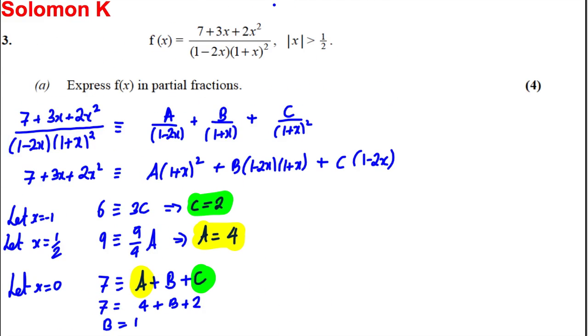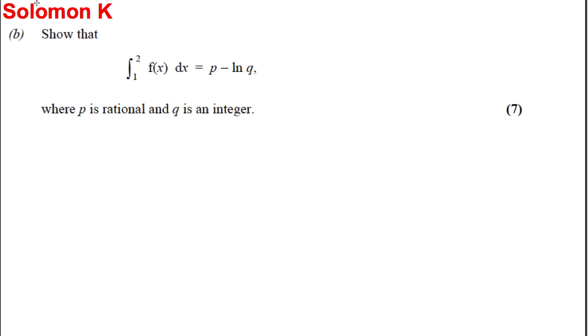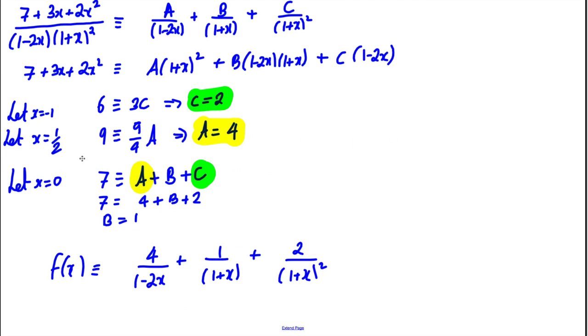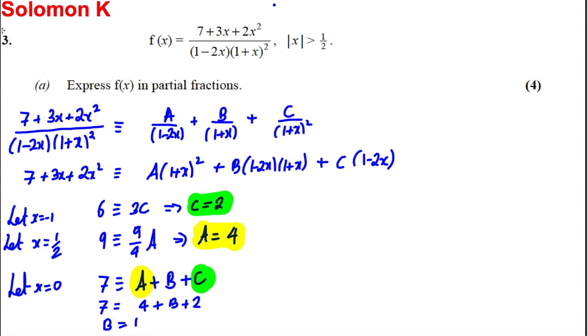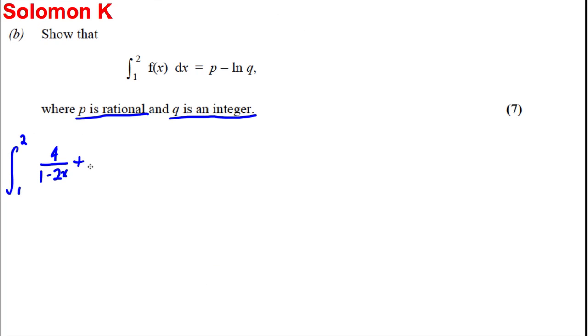For four marks. And the next part, we're going to work out this integral of f(x). We're going to make sure that P is rational, so it's a fraction, and Q is an integer. So the integral between 1 and 2 of f(x) is actually equal to 4 over (1 minus 2x) plus 1 over (1 plus x) plus 2 over (1 plus x) squared, with respect to x dx.